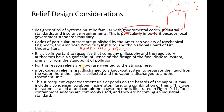For this reason, reliefs are now rarely vented directly to atmosphere - things are treated before disposal. In most cases, a relief is first discharged to a knockout system. For example, if contaminated water is discharged to the sea it must be treated first. When a relief occurs due to overpressure, the discharge commonly goes to a knockout system to separate liquid from vapor. The liquid is collected and the vapor is discharged to another treatment unit.